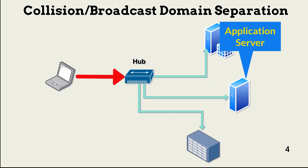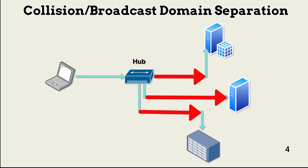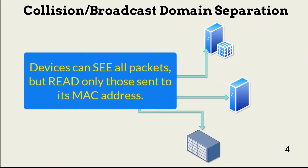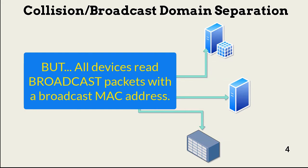In a collision domain, all devices can see all traffic on the network — that doesn't mean they read all packets. They look for packets with their MAC address and read those only, unless the system is set up in promiscuous mode, which is not usually the case. This network is also a broadcast domain: all devices in the network read all broadcast packets placed on the network.